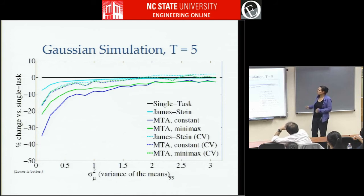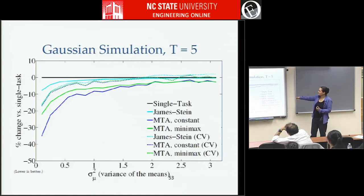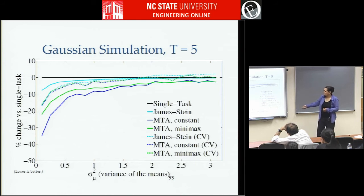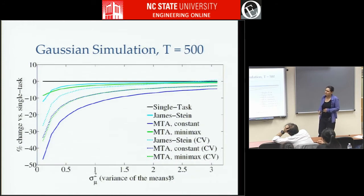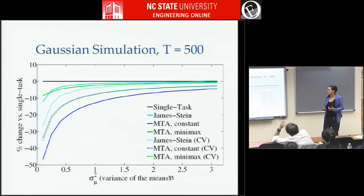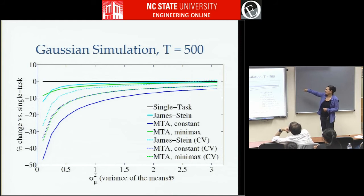In the Gaussian simulations with five tasks, the MTA constant — our main proposal, the dark blue line — is compared to single-task averages at zero. James-Stein in cyan nicely gains all the time, but not as much as MTA. The x-axis is the variance of the means — how much are the means shifted on average. With 25 tasks and 500 tasks the gains get larger and smoother as you bring more data together. Even when means are three standard deviations apart, everything is still doing slightly better than just taking single-task estimates — pretty robust. You also see MTA constant doing better than cross-validated versions.